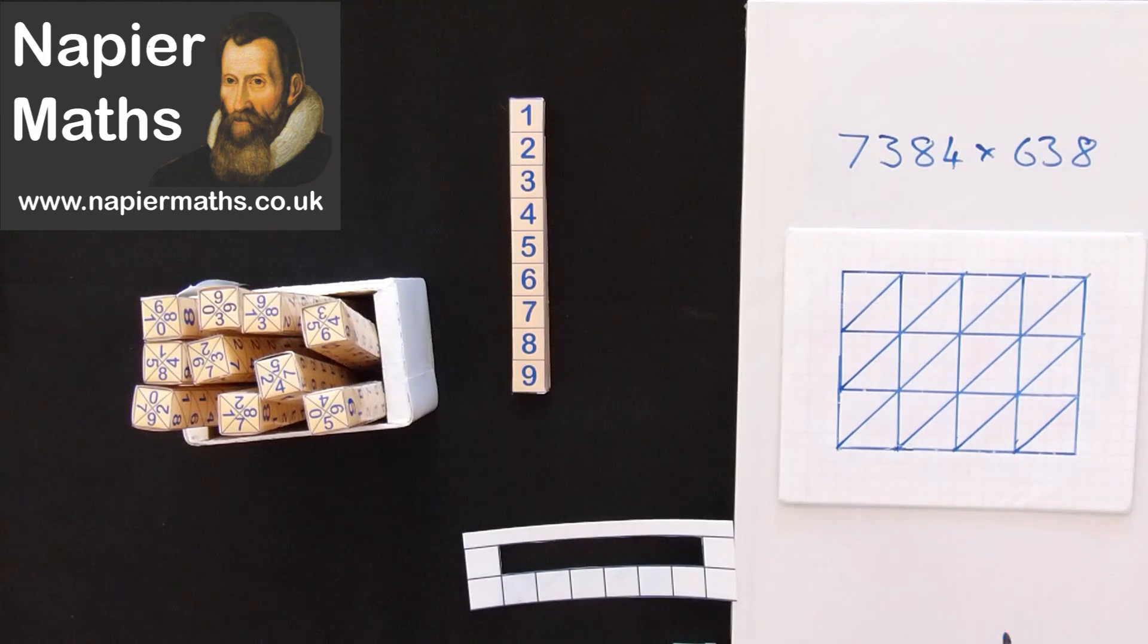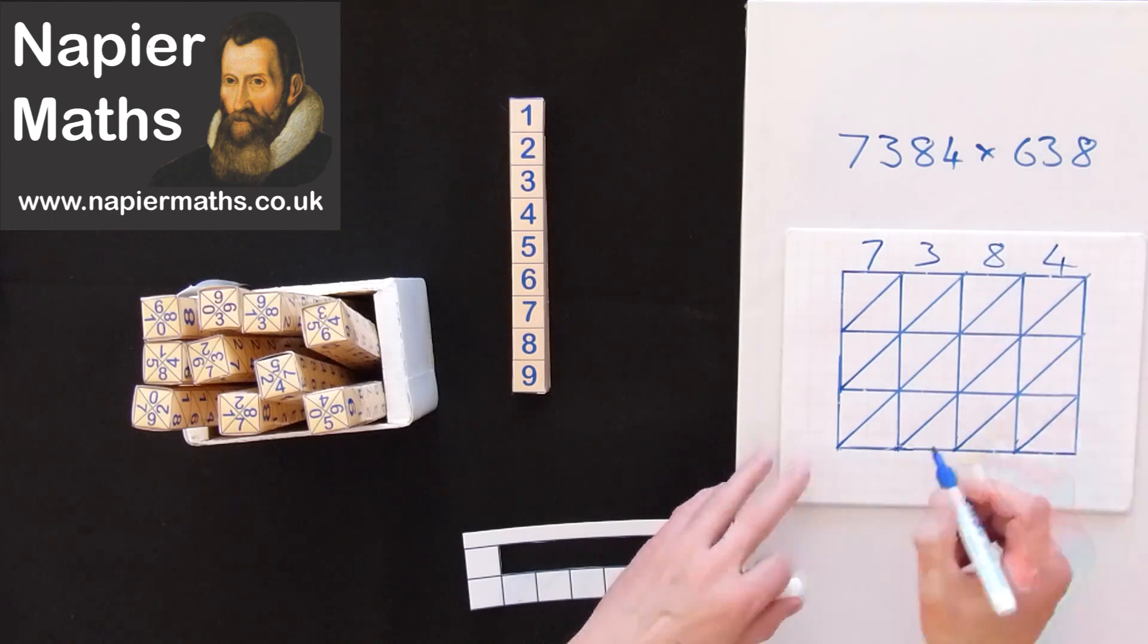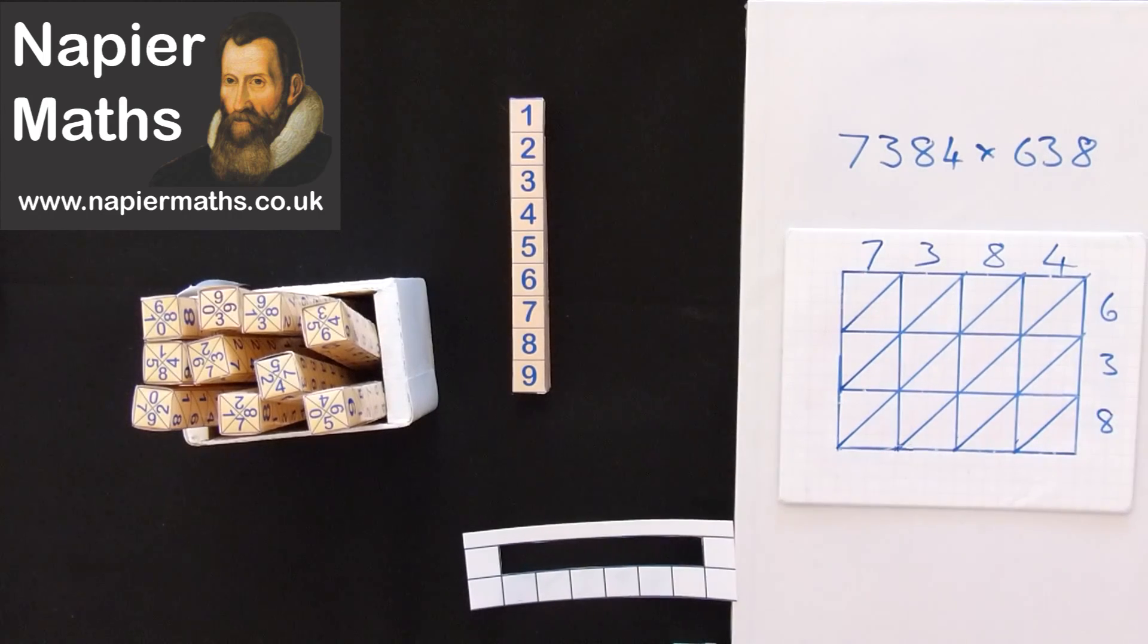And there's a grid there. Along the top, we've got 7,384. And along the side, we've got 638. And we're all set to get going with our bones.